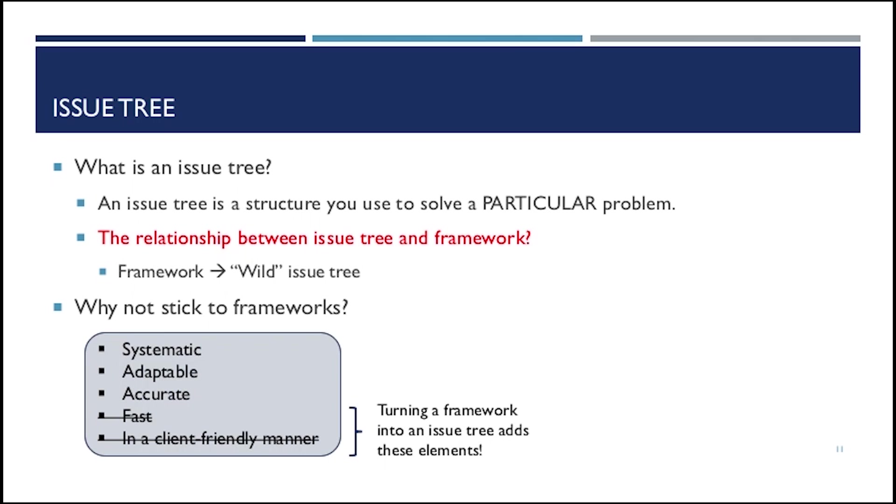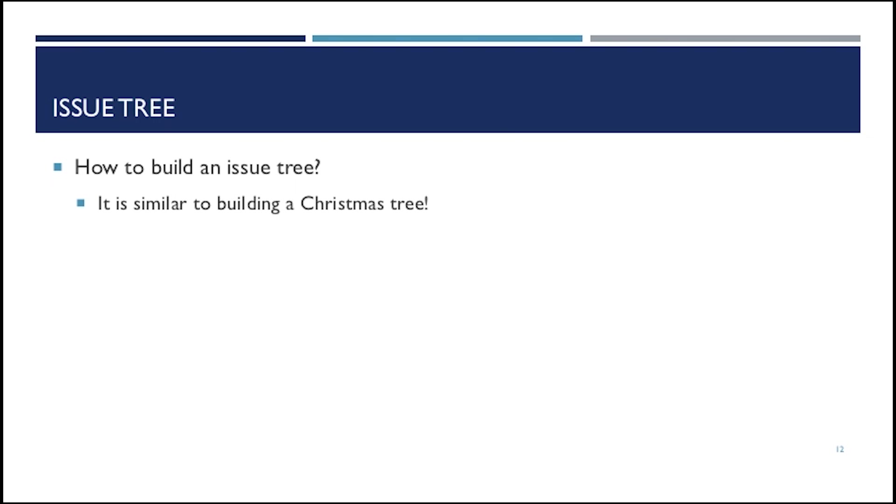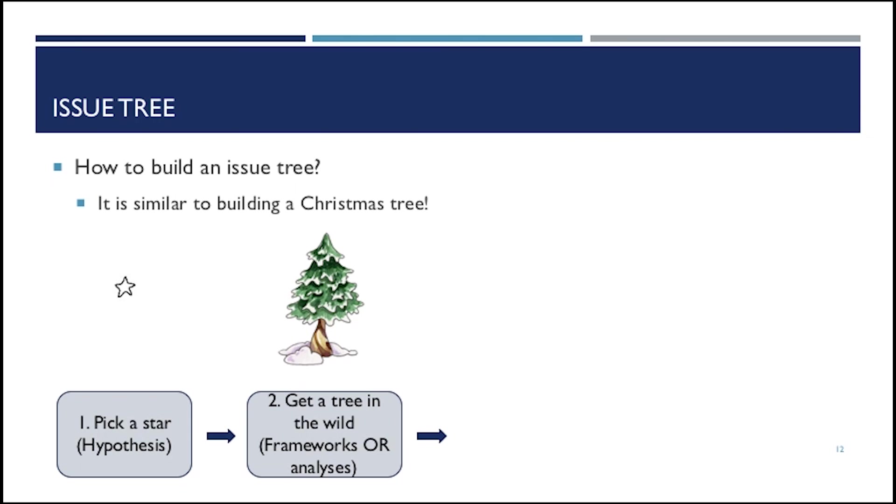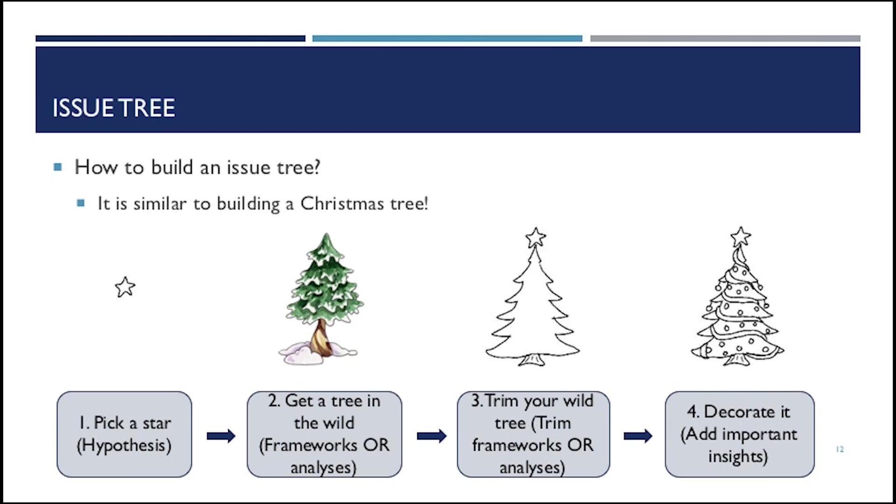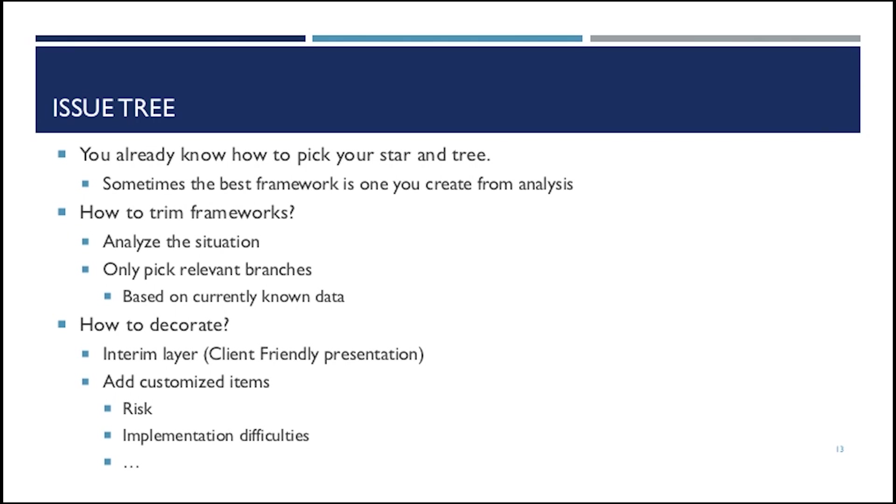How to build an issue tree? In my view, it's actually pretty similar to building a Christmas tree. How to build a Christmas tree? First, you have a star. You pick your star. You get a hypothesis first. And then you get a tree from the wild. That is, you pick your frameworks or your analysis from your previous data. Then trim your wild tree. So you trim the frameworks that you have or you trim the analysis you had. And at the end, you decorate the tree. You add very important insights to that. And that will be your Christmas tree. And that will be your issue tree.